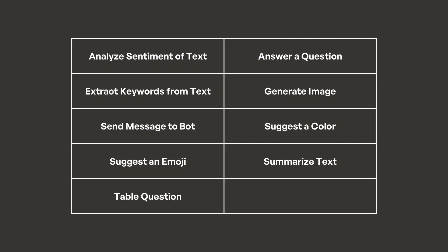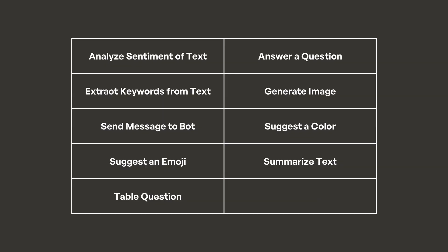Here are some of the things you can do with AI in Glide now. You can analyze the sentiment of a text — a practical example would be customer feedback sentiment analysis. You can extract keywords from text, generate an image, suggest an emoji, summarize text, and even suggest a color. I'm really curious why you would suggest a color — maybe based off sentiment? I don't know. If you have a use case, let me know. I'd love to hear it.